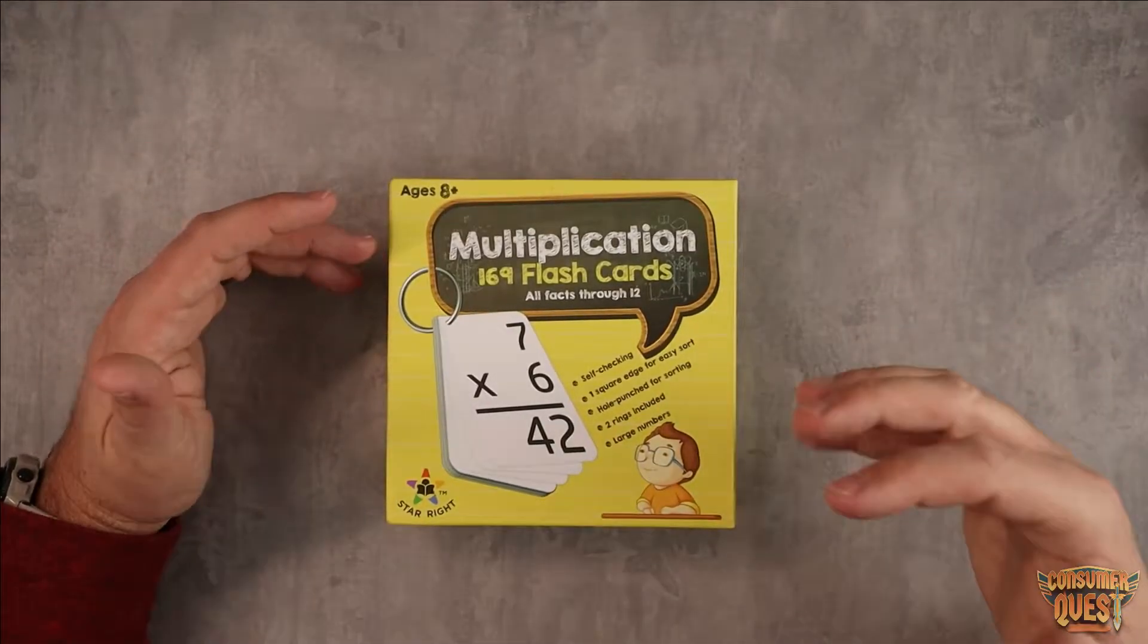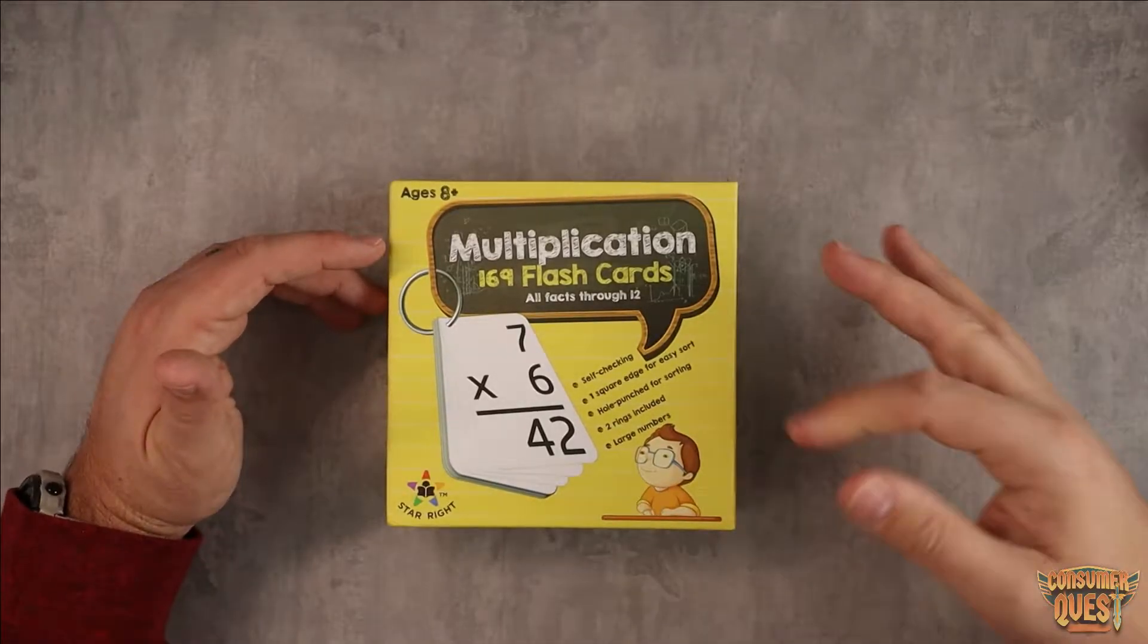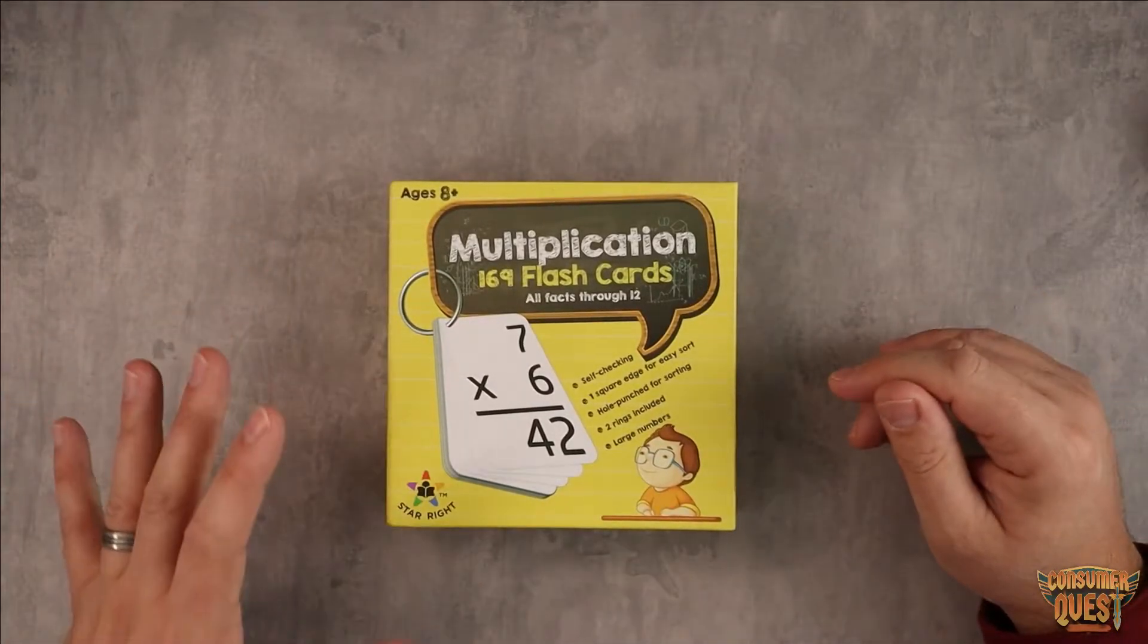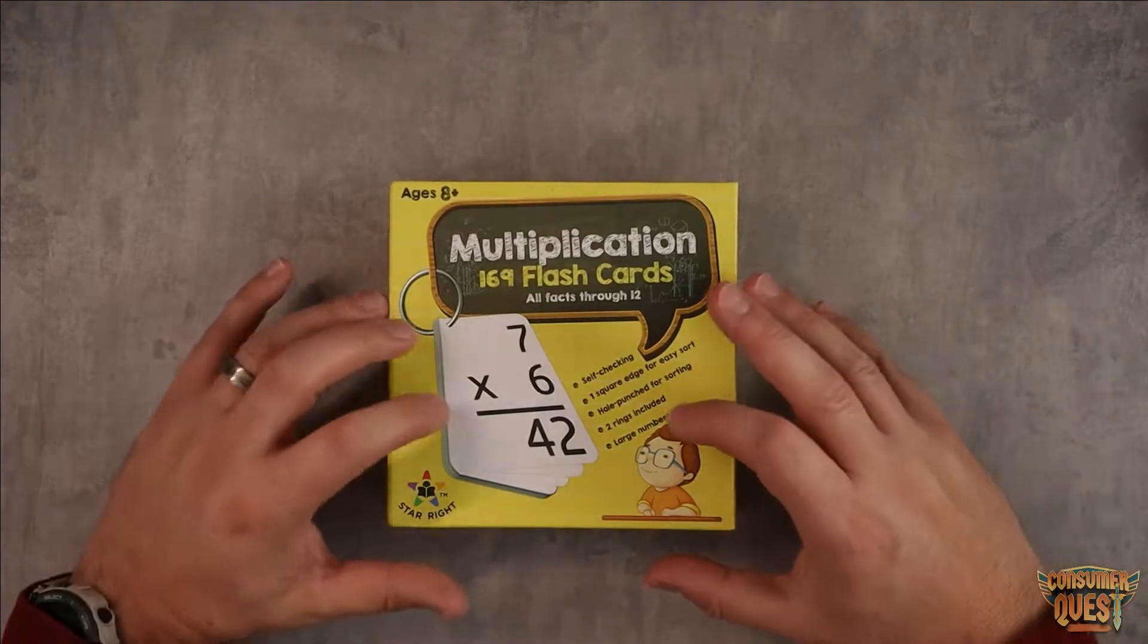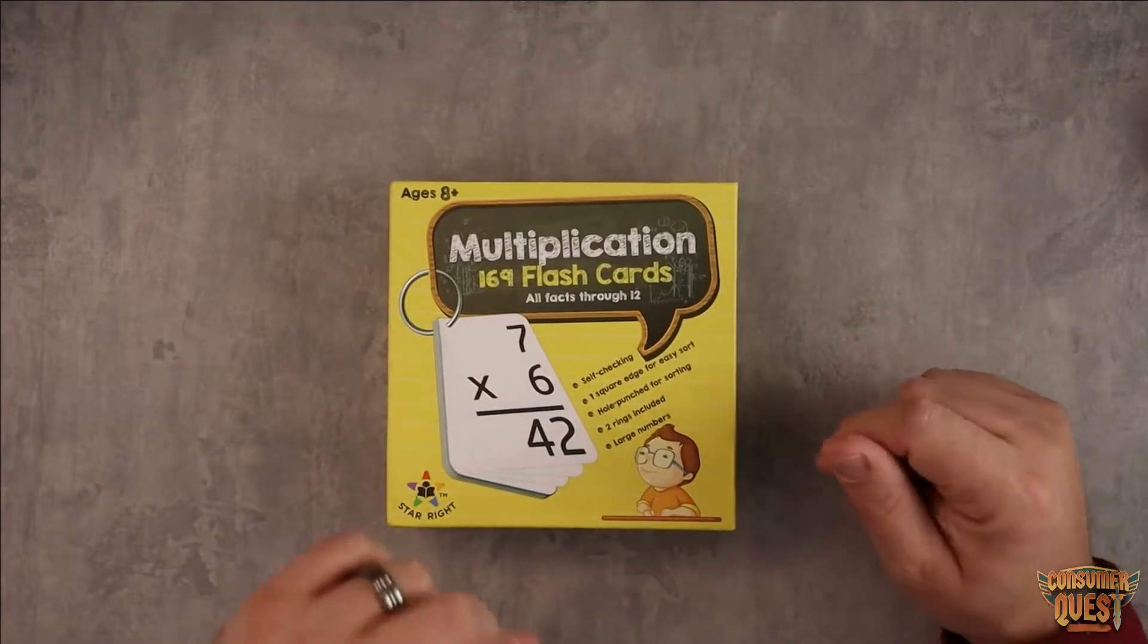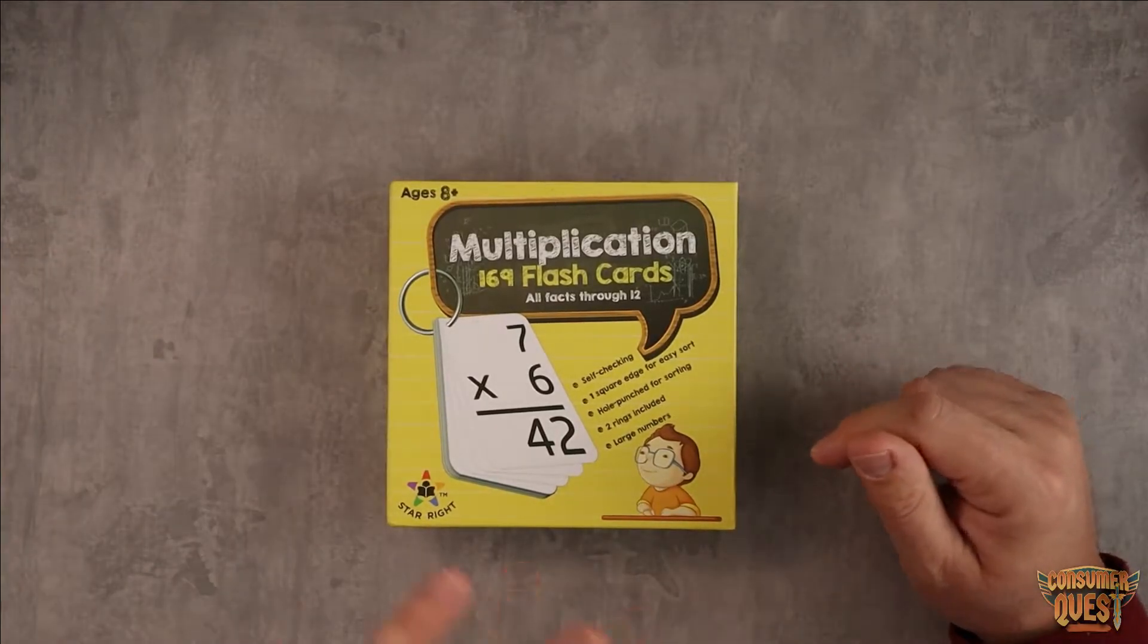They have the punch hole with the ring which is really convenient, and they have large numbers. We got these in particular because my daughter is currently struggling with her multiplication, so we want to help her get a level ahead with flash cards that not only she can do herself, we can do with her.